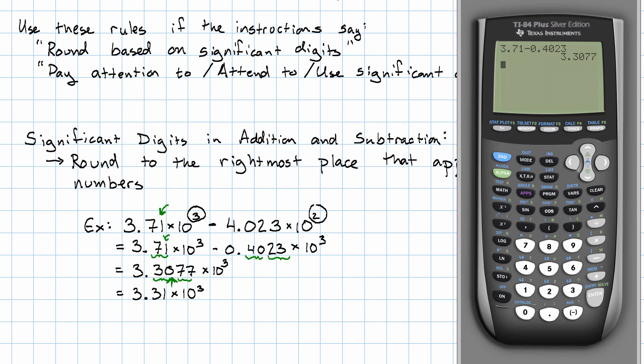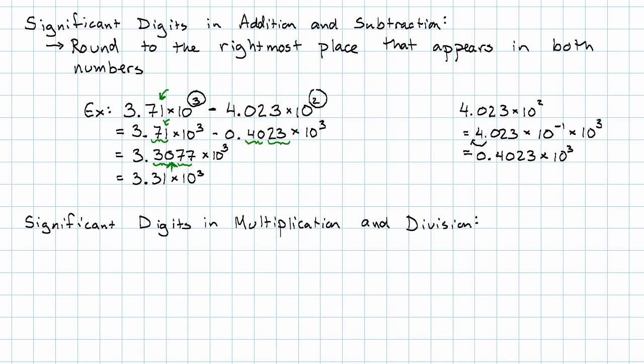The easier rule is the one for multiplication and division. Remember that when we multiply and divide, the actual place values don't really matter.